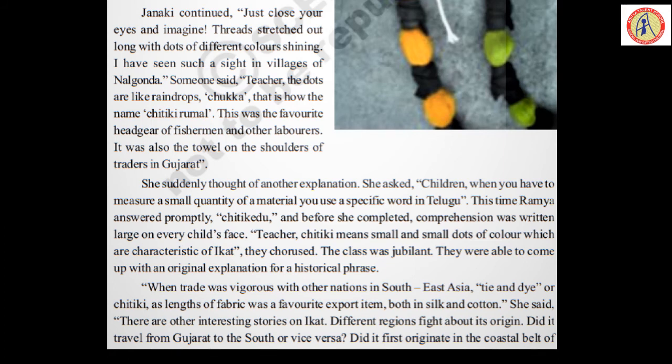Teacher: Chitiki means small, and small dots of color are the characteristics of Ikat. The chorus — the class was jubilant. They were able to come up with an original explanation for a historical phrase. The comprehension — the ability to understand — came to the children, and the class became very, very happy. Jubilant means very happy, and they are all responding at once with an original explanation.